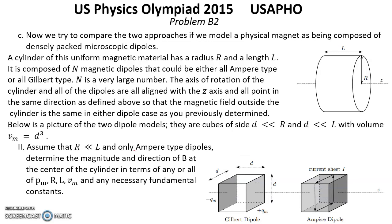Question 2: Assume R << L, using only Ampere-type dipoles. Determine the magnitude and direction of B at the center of the cylinder in terms of PM, R, L, VM, and any necessary fundamental constants. Solution: The currents making up the dipoles cancel out except on the cylindrical surfaces, so the cylinder acts like a solenoid, with B = μ₀·I/d, where I/d is the surface current density. The magnitude of B is given by this expression, and the direction is to the right. That is the answer for Question 2.